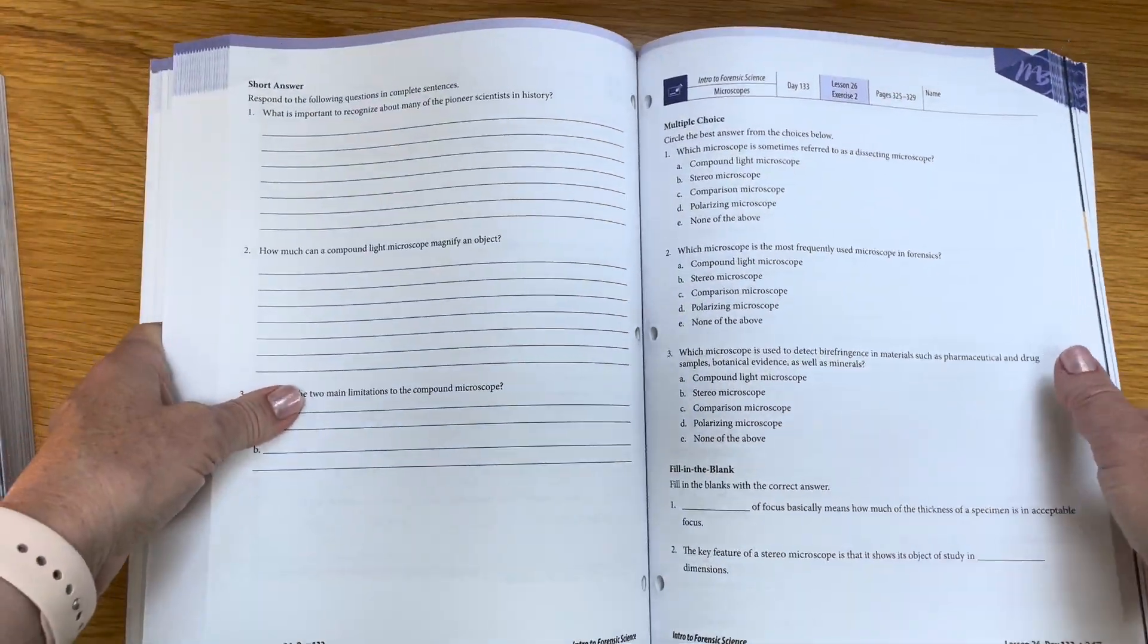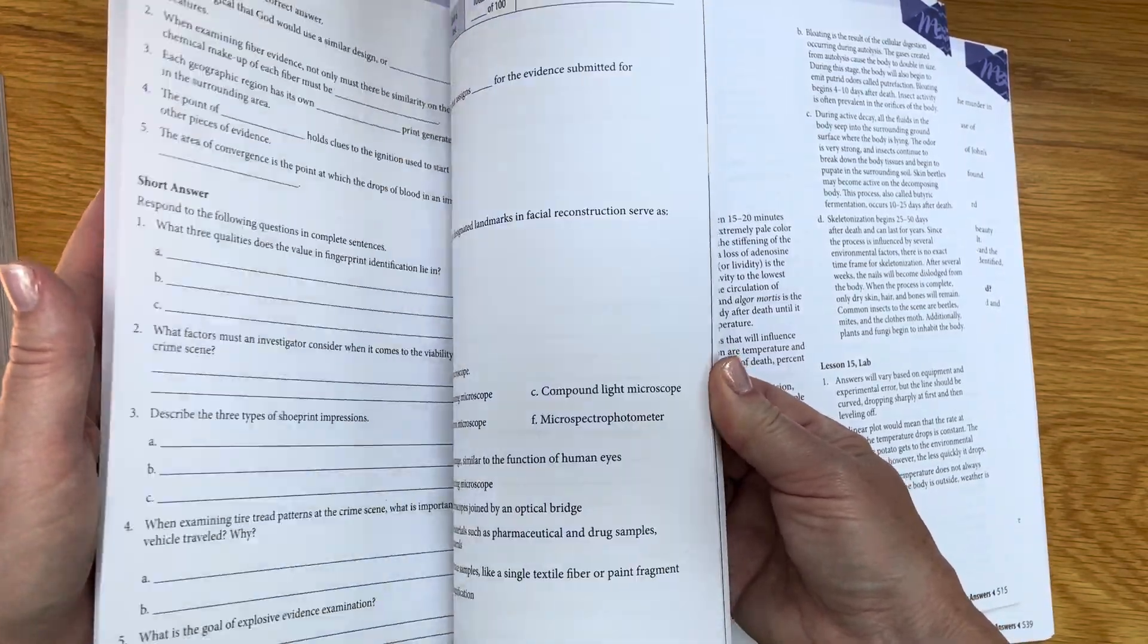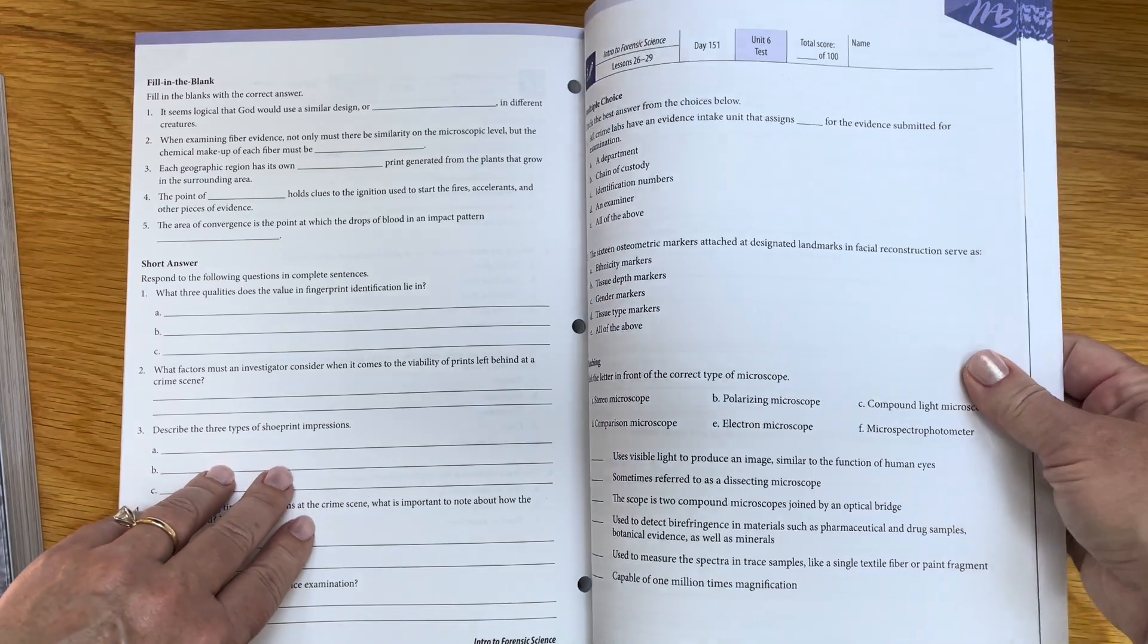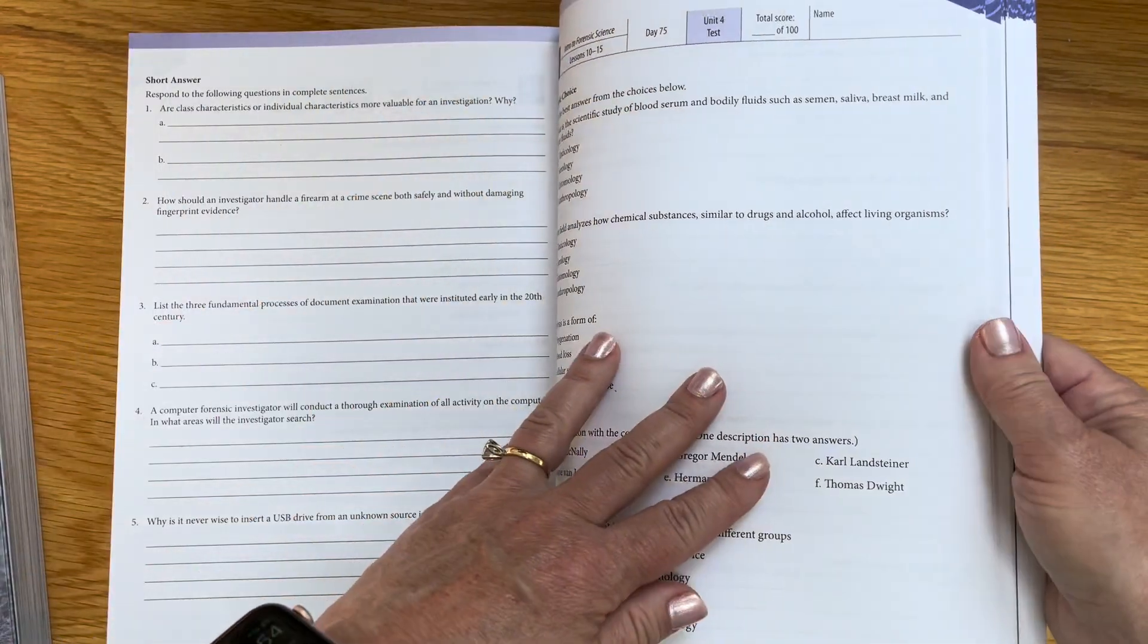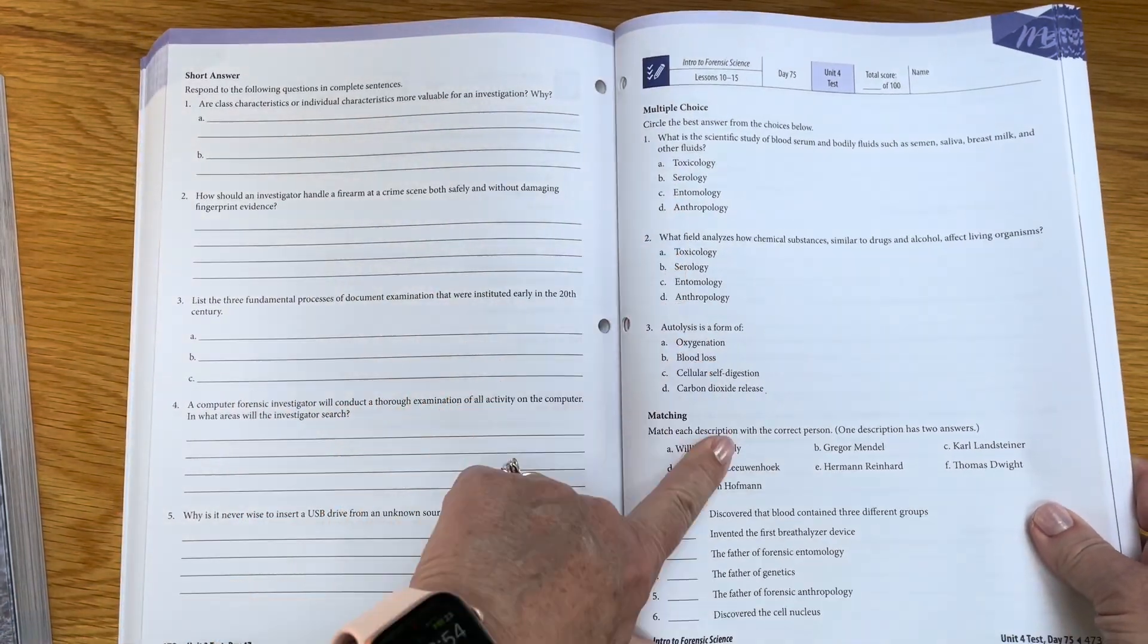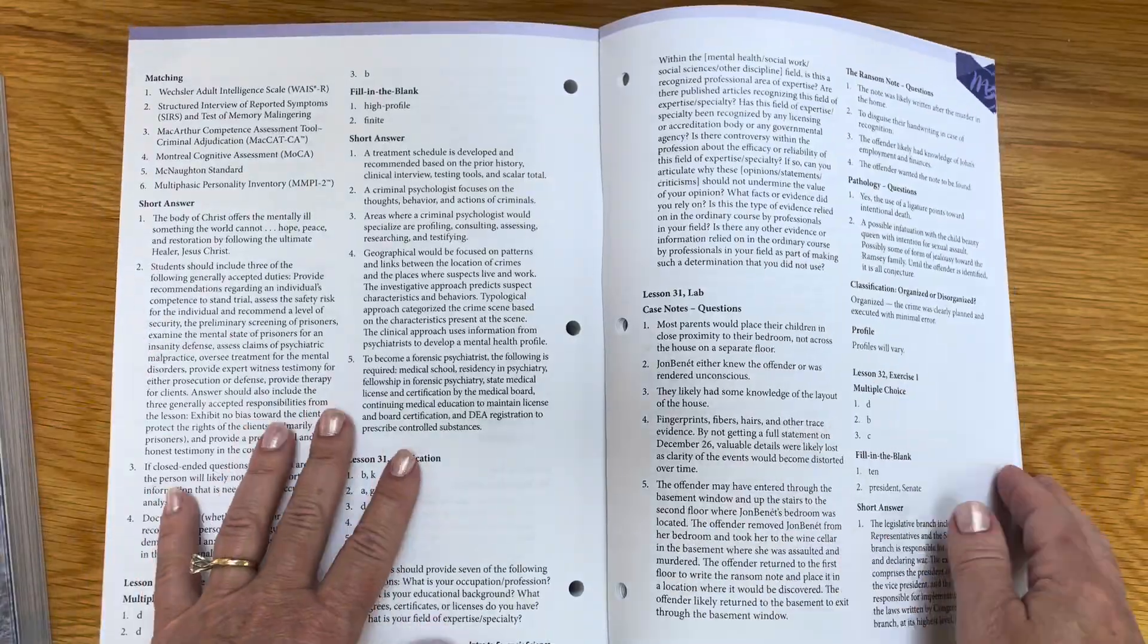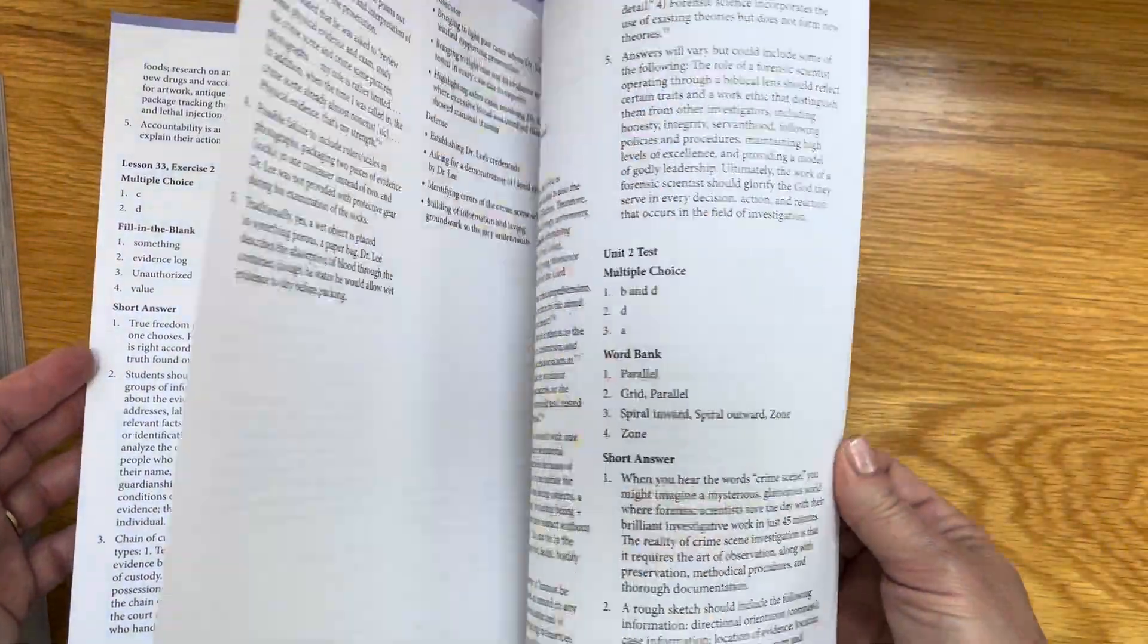The tests are at the end of this book. You've got both the tests that you hand out to the student. These are tests you can see, so this is a test that you could tear out and give to the student. Then the very last part of the book are the answers, so these are all the answers that you can use to grade your student's work.